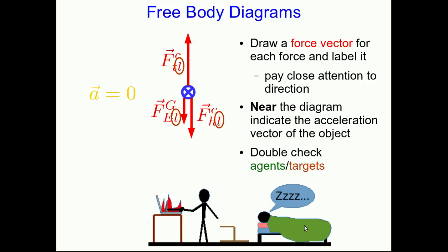Finally, it's a good idea to do a double check of agents and targets. If you're using the notation I'm using for forces, then the second subscript on every force should be its target, and they should all be the same. On your free body diagram, every force should have the object of interest as its target. If you find that by accident you've included a force where the object of interest is the agent, that doesn't belong here. That's a force exerted by the object, not on it, and it won't have any effect on the object's motion.